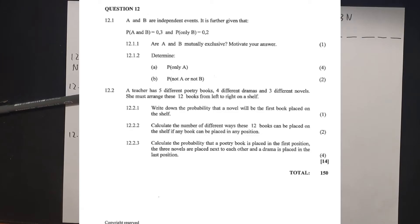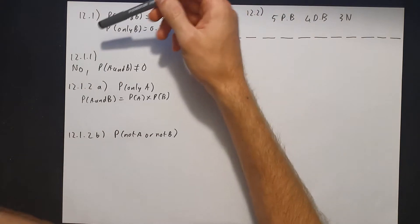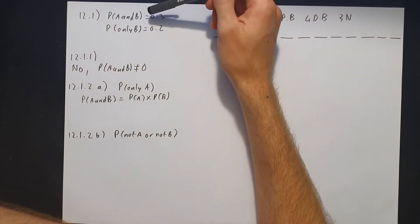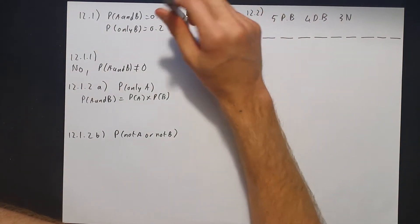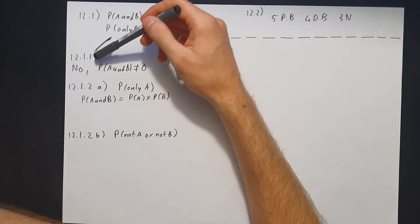Looking at question 12, we're dealing with a probability question. A and B are independent events. It is given that the probability of A and B is 0.3 and the probability of only B is 0.2. They ask: are A and B mutually exclusive? A and B equals 0.3, so therefore they're not mutually exclusive, because the probability of A and B does not equal zero.